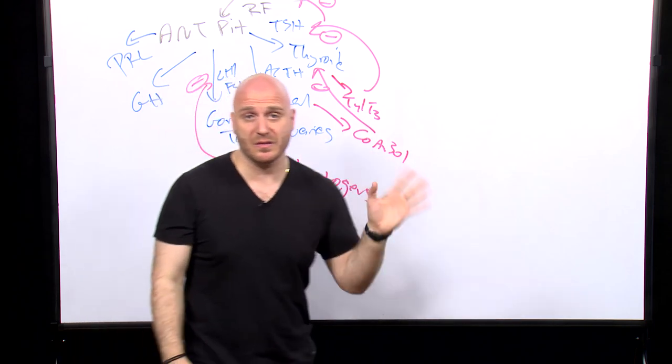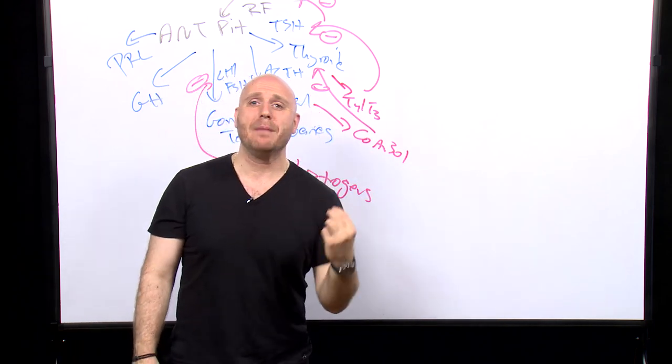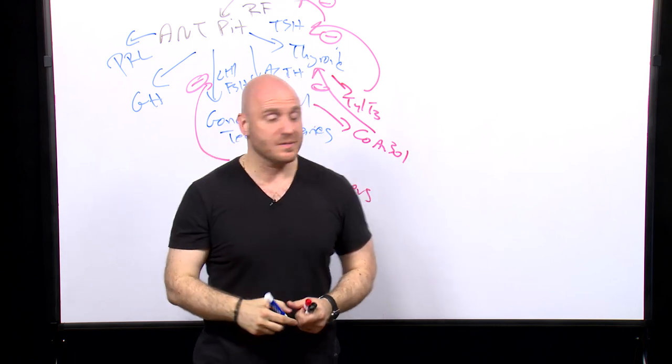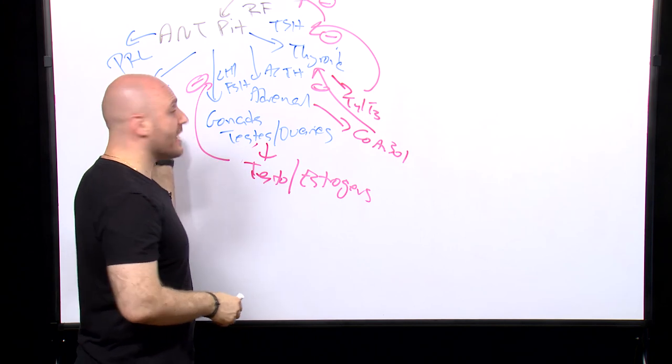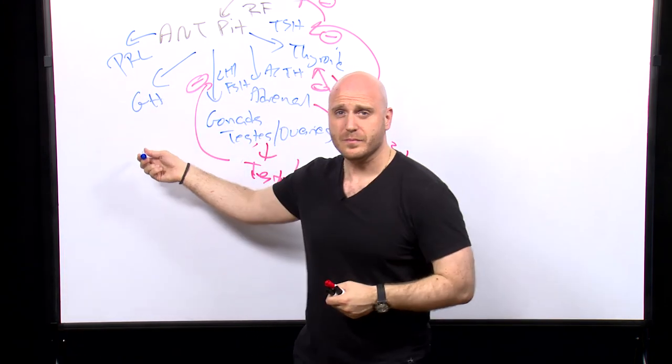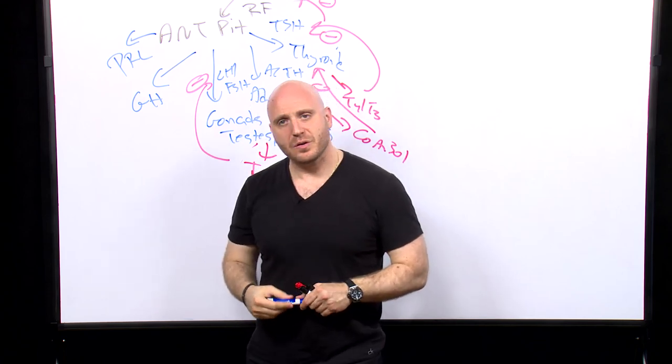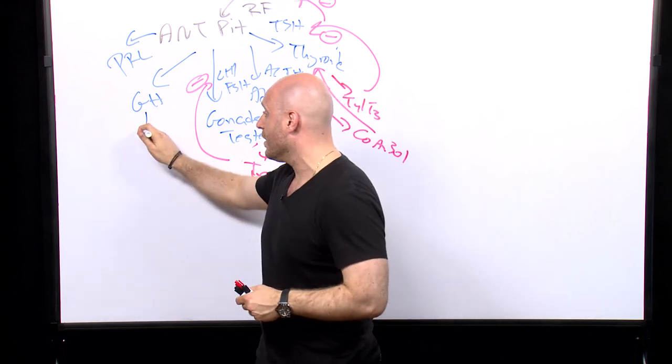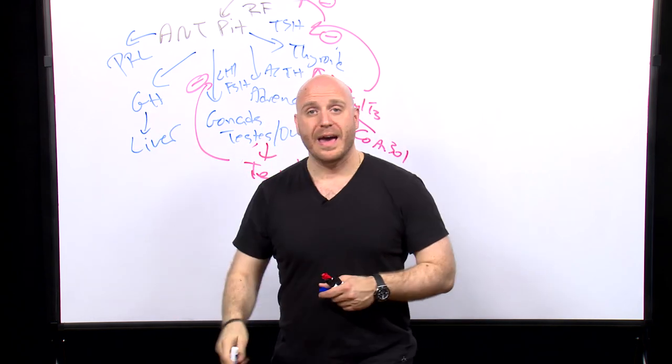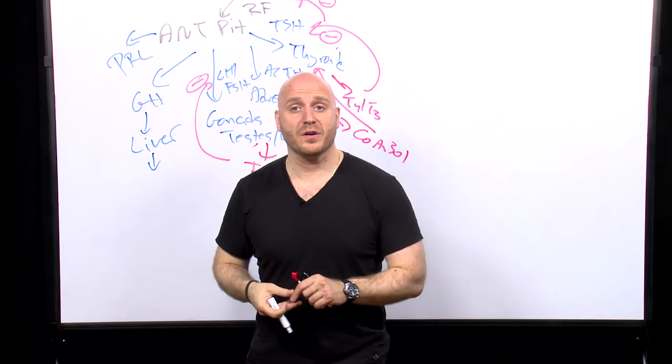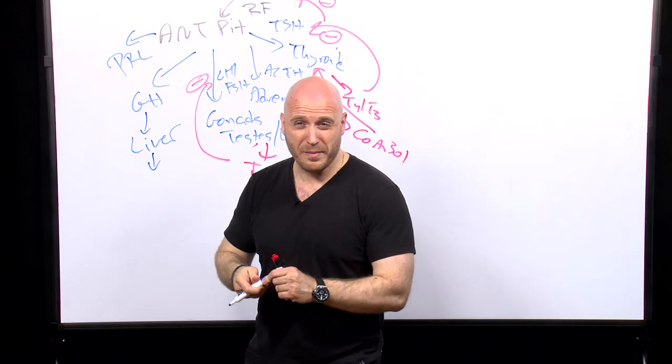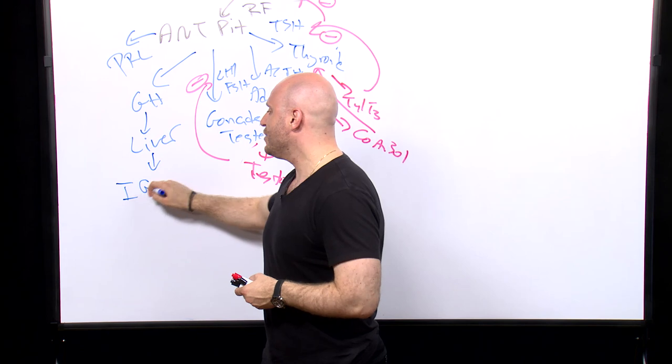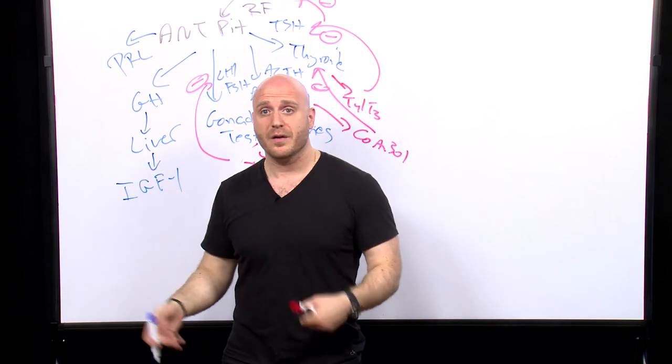Now we do have some exceptions. This is the general order of things in the hypothalamic-pituitary axis, but you do have some exceptions. Exception number one: the growth hormone axis. The GH axis is a little unique. Growth hormone does not stimulate a direct target gland, but rather it stimulates an organ—the liver. The liver then produces the workhorse of the growth hormone axis: insulin-like growth factor one, IGF-1.